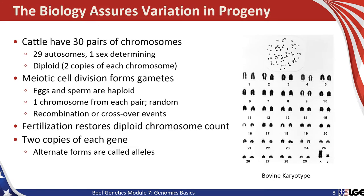One of the interesting aspects of genomics and beef cattle genetics is that the biology assures variation in the progeny. There are mechanisms that underlie basic genetics that help determine the amount of variation and ensure variation between generations from individual parent matings. Cattle have 30 pairs of chromosomes — 29 autosomes, which are the non-sex-determining chromosomes, and then one pair of sex-determining X and Y chromosomes. Of course XX defines the female and XY the male. Cattle, like other mammals, are diploid in their chromosomal structure, so they have two copies of each chromosome, each one of the pair deriving from either the sire or the dam.